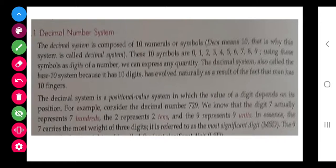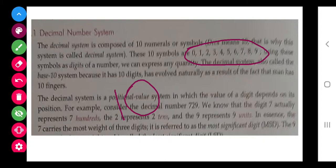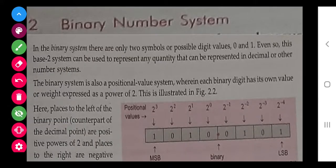The first is the decimal number system. It includes 10 numerals: 0, 1, 2, 3, 4, 5, 6, 7, 8, and 9 — that is 0 to 9. The base value indicates how many digits the system has. The base value of decimal is 10.